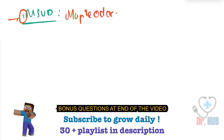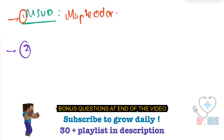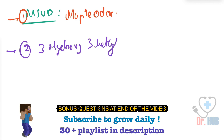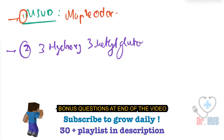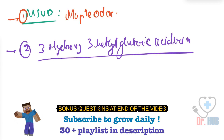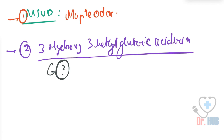The second question was: what is the urine odor in case of 3-hydroxy-3-methyl glutaric aciduria? The answer is that it is a cat urine odor.